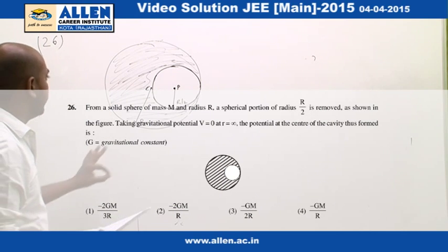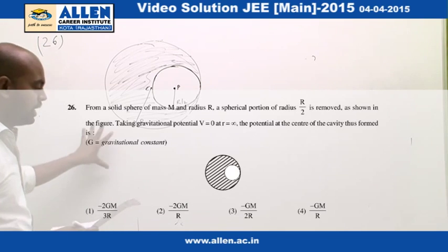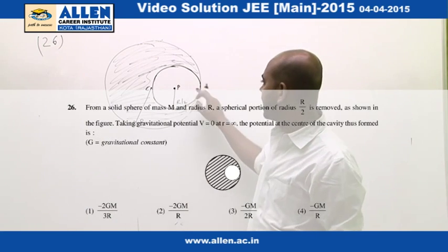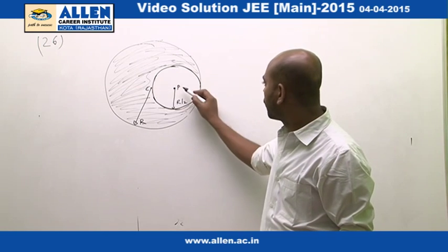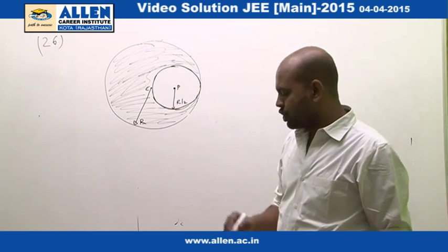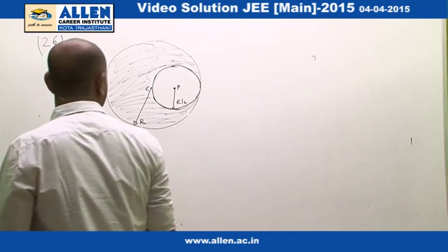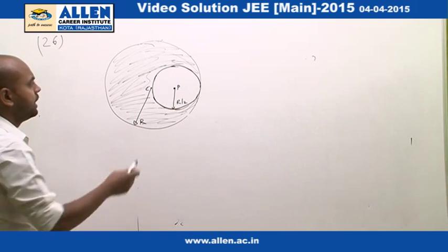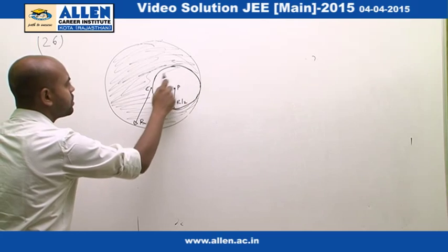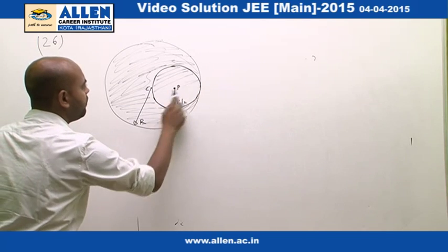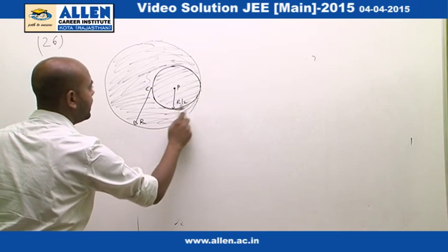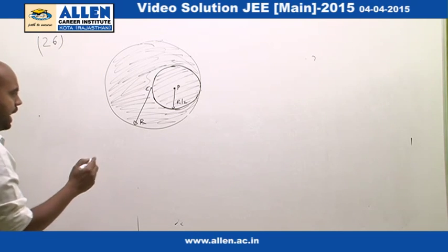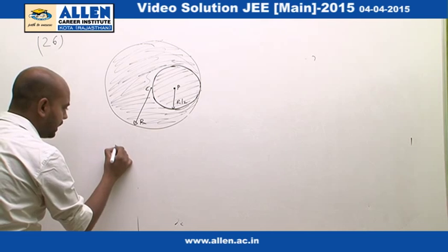In question number 26, we have a uniform body with a cavity of radius r/2, and we have to find out the potential at point P. Potential is a scalar quantity. We assume the body is completely filled - this is the extra part we fill in the gap so it becomes a complete solid sphere.